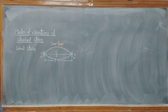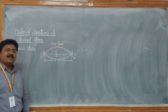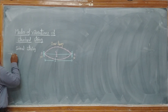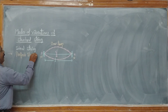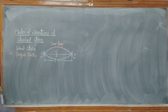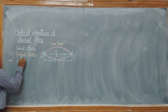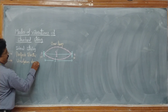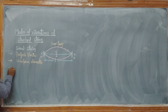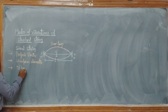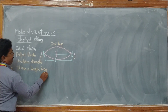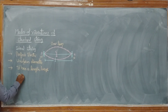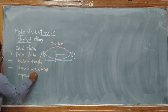The string we have taken into consideration is an ideal string. An ideal string is one which has perfect elastic property — it is perfectly elastic — it has a uniform diameter, and its length is large compared to its diameter.